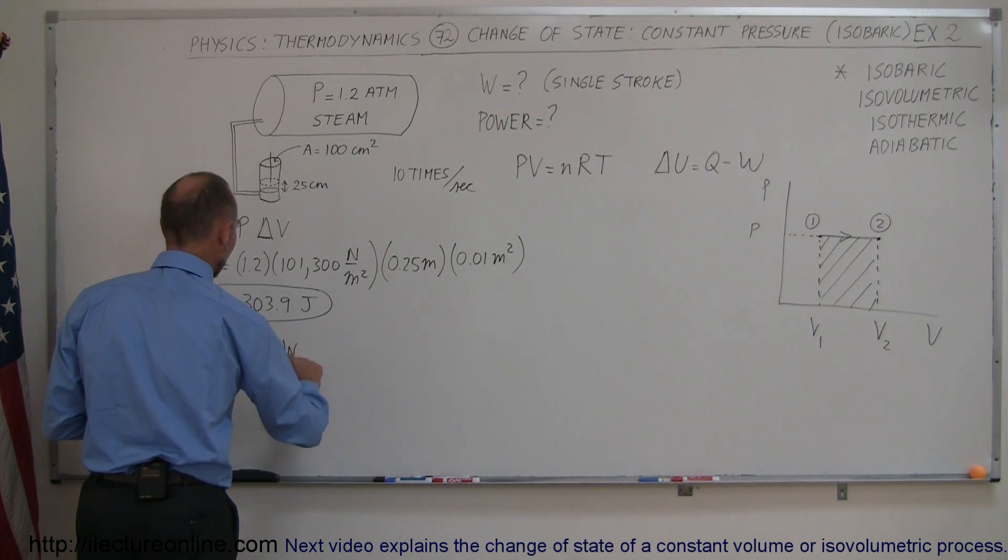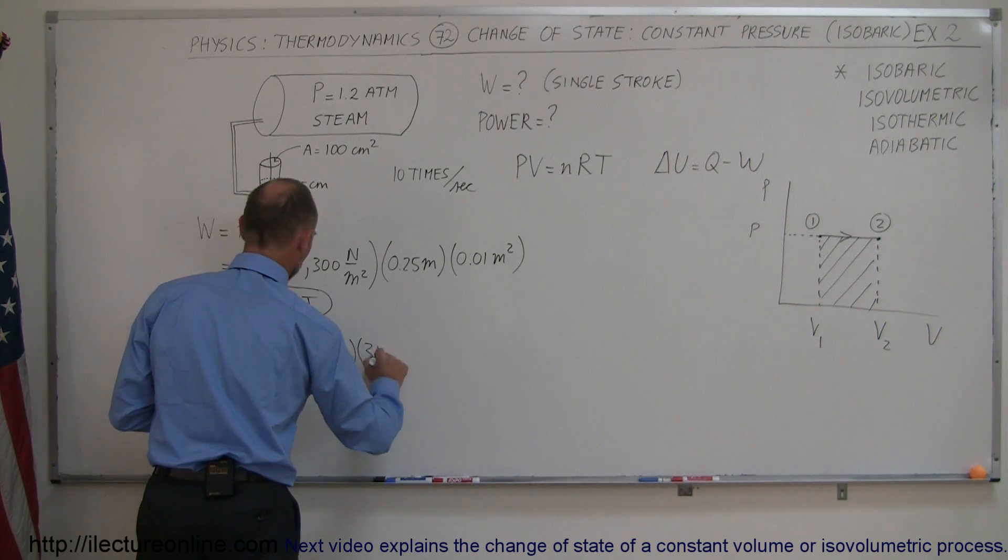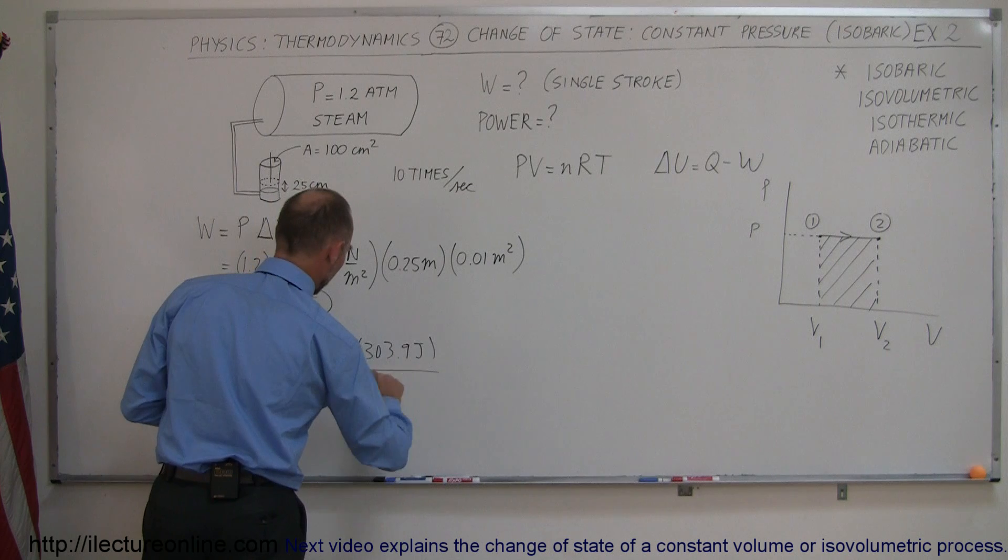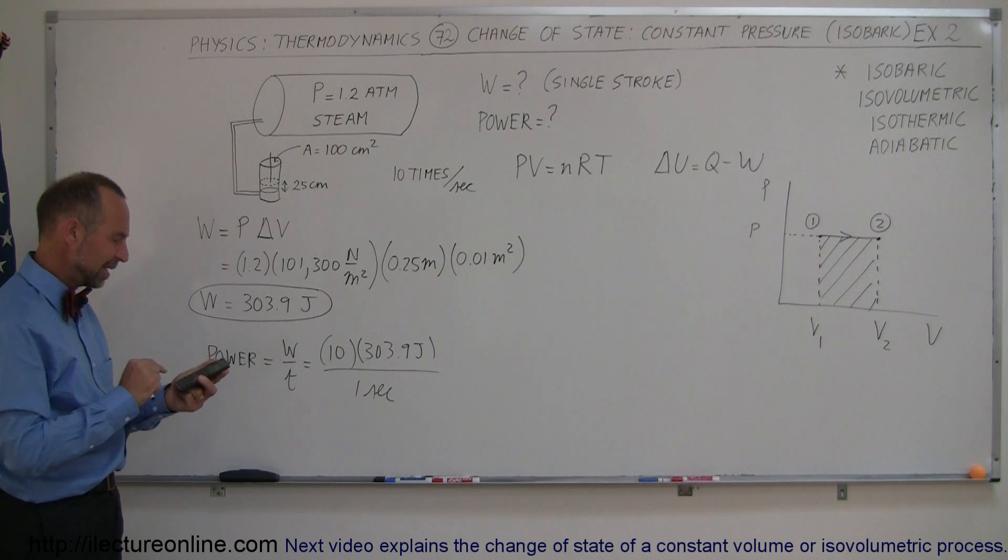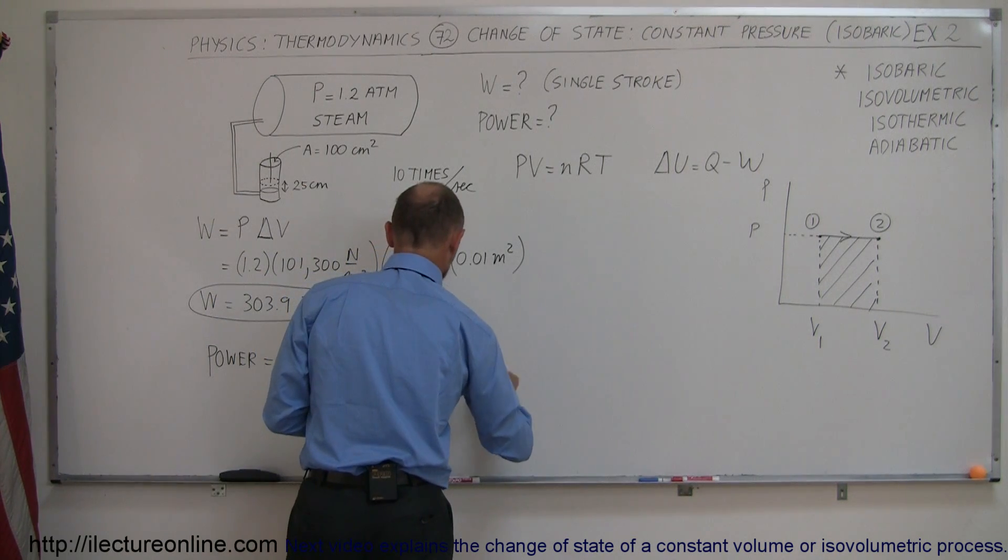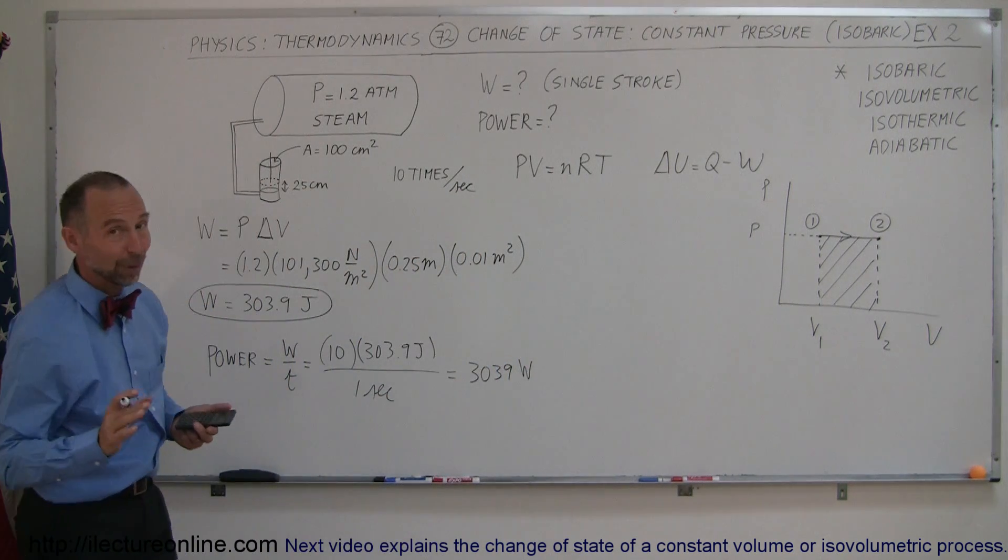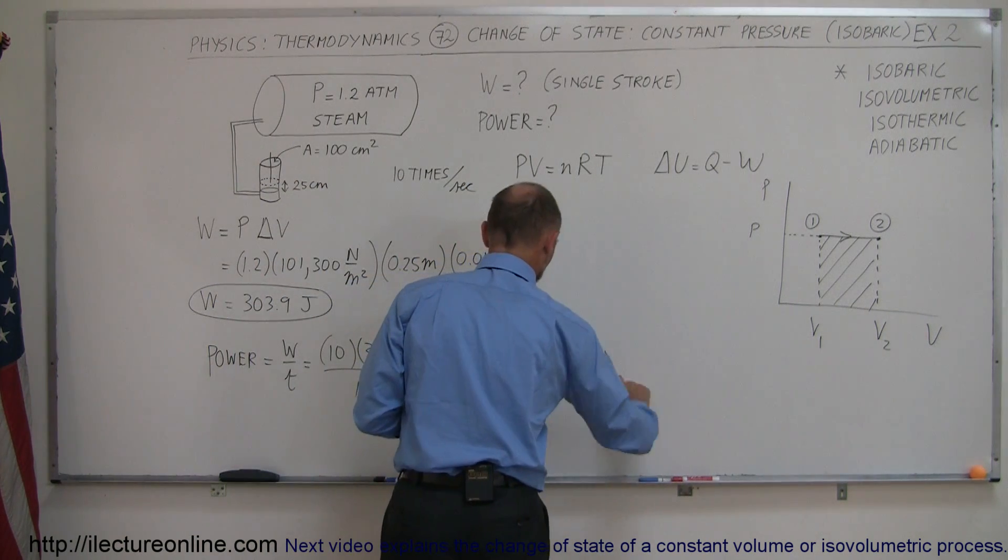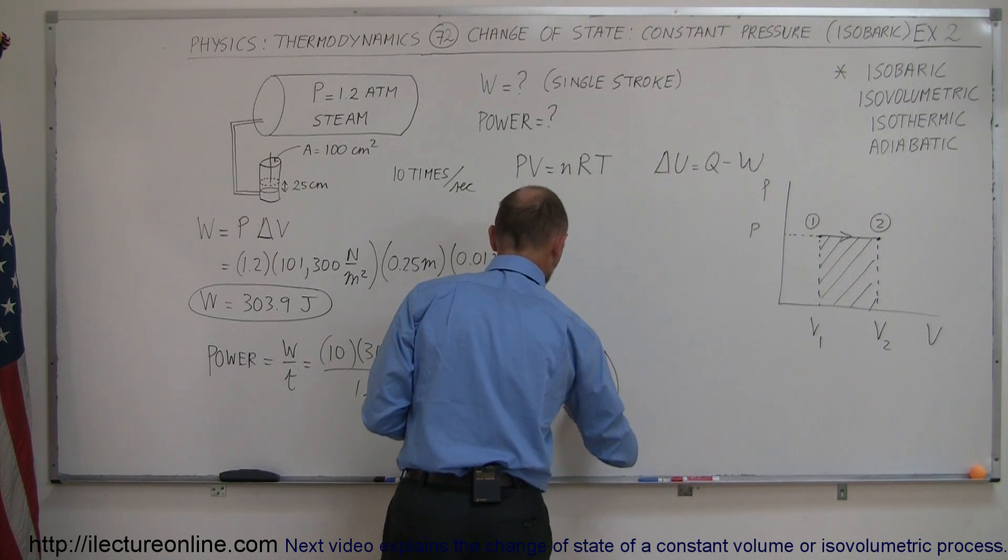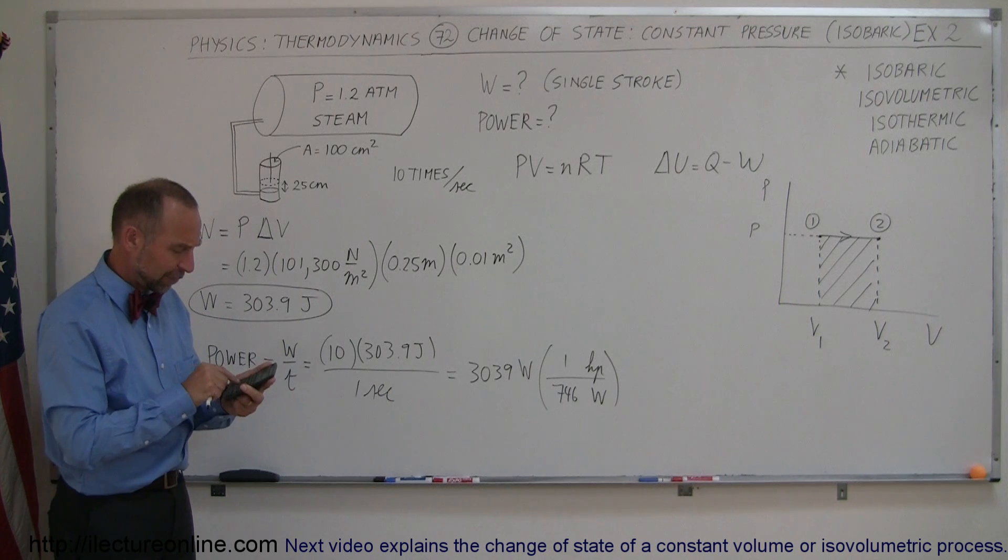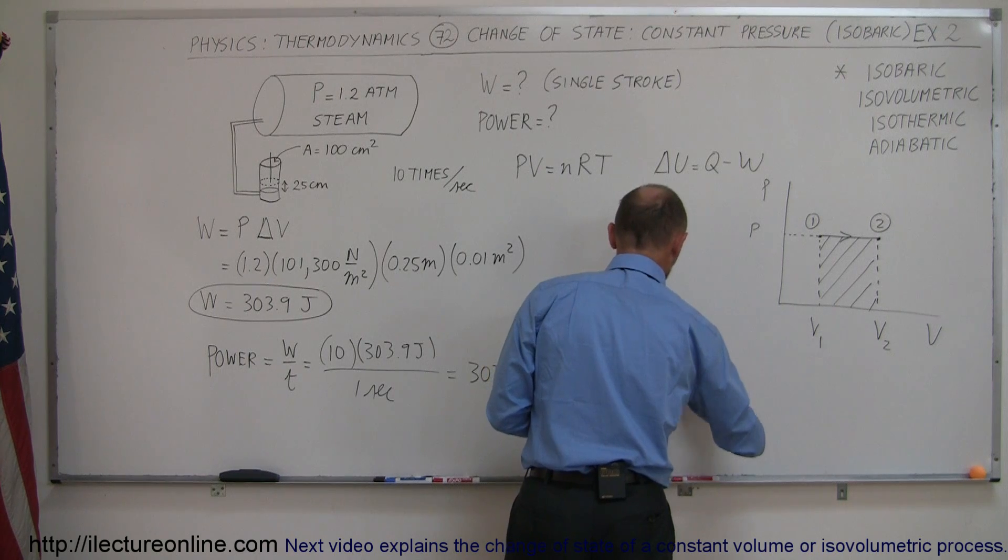So, power is equal to work divided by time. And, of course, we're going to do 10 times this amount of work, 303.9 joules per one second. And, of course, joules per second, that is equal to watts. So, we multiply this times 10. That means this little engine puts out 3039 joules per second, or 3039 watts. And if you want to convert that to horsepower, if you remember the conversion factor, horsepower at the top, watts at the bottom, one horsepower is 746 watts. So, if we divide that by 746, we can see that that is equal to about 4.07 horsepower.